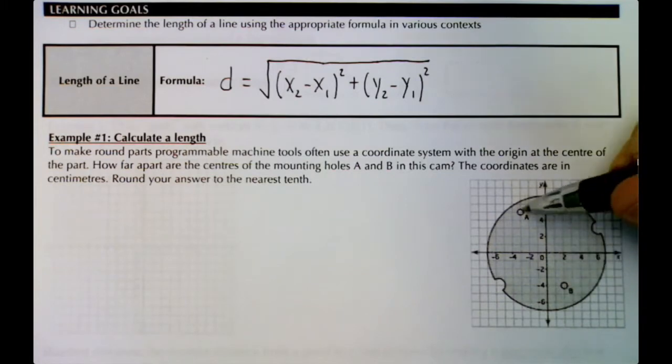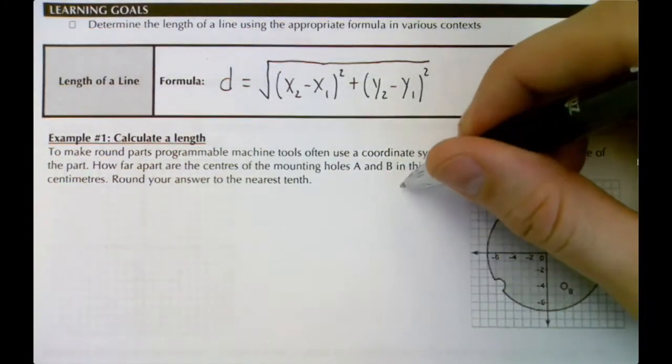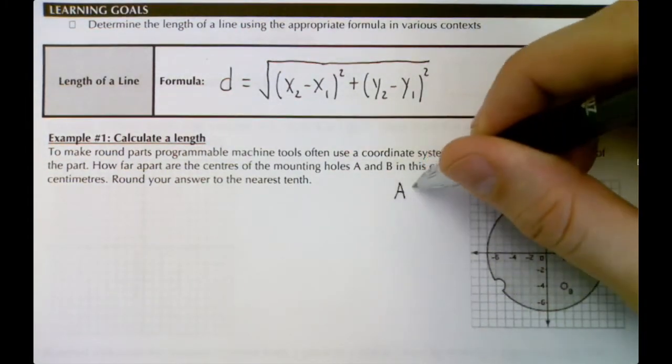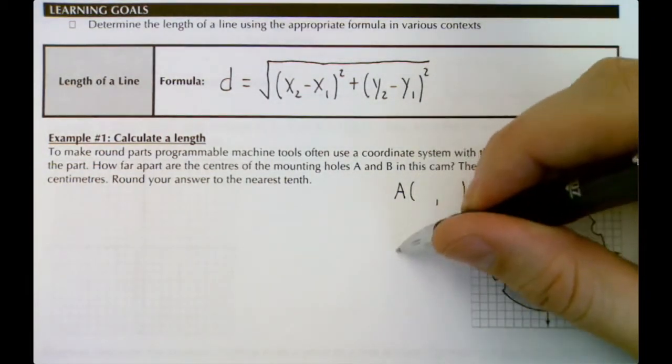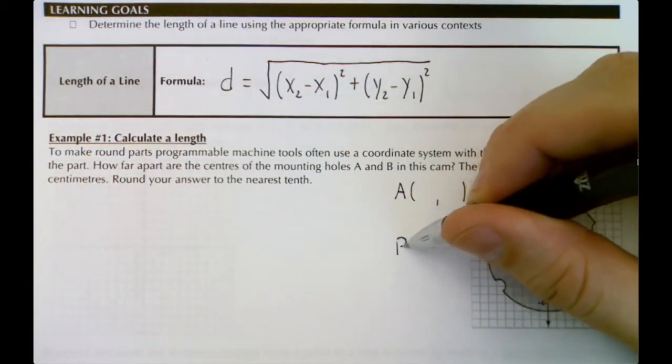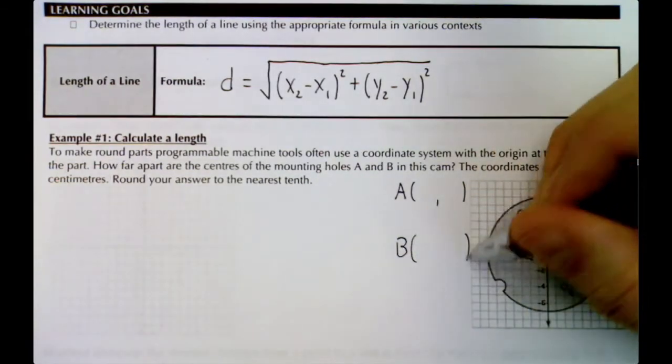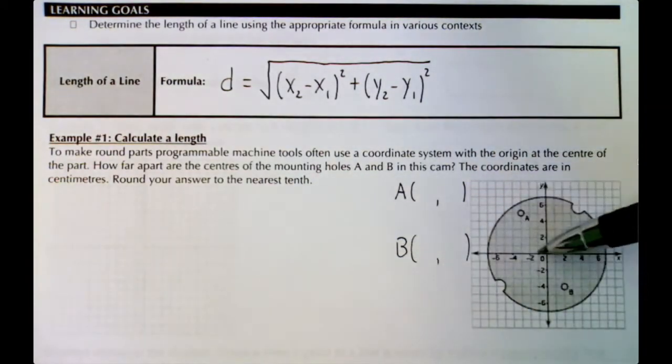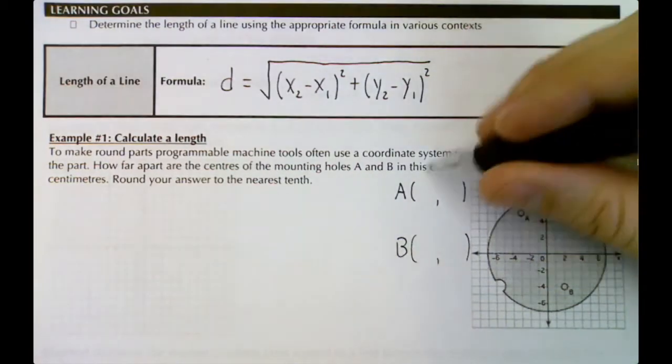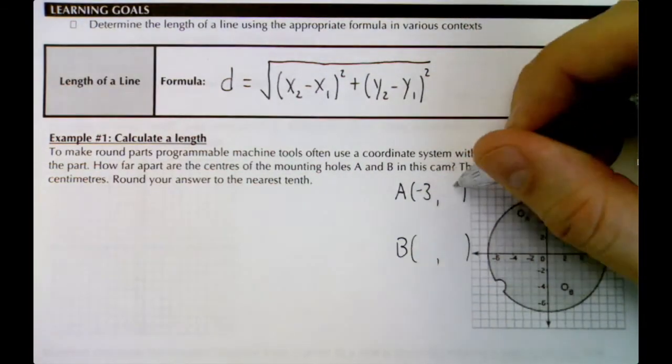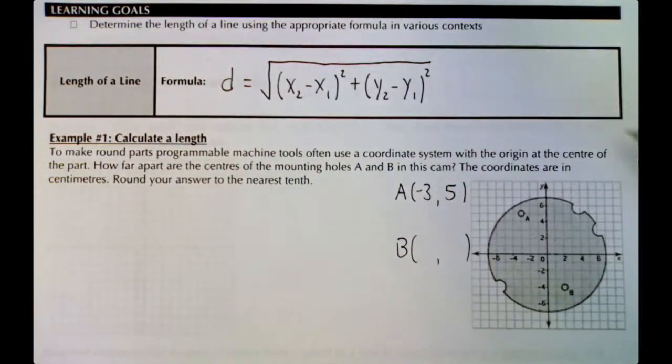The coordinates are in centimeters and we're going to round our answer to the nearest tenth. We've got our two mounting holes A and B. I'm going to write the coordinates of these points off to the right here. So A is a coordinate and B also.